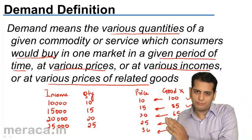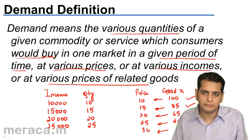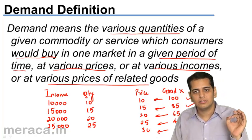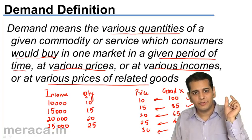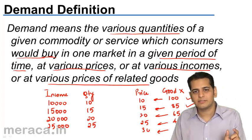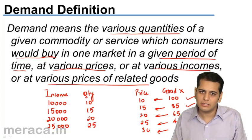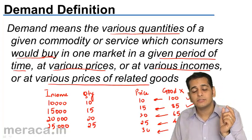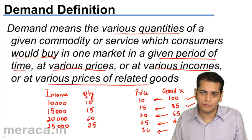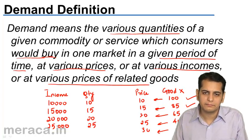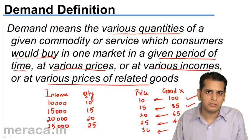To summarize: demand refers to various quantities bought at various price levels, or at various income levels, or at various prices of related goods, during a particular period of time. This is what demand means.